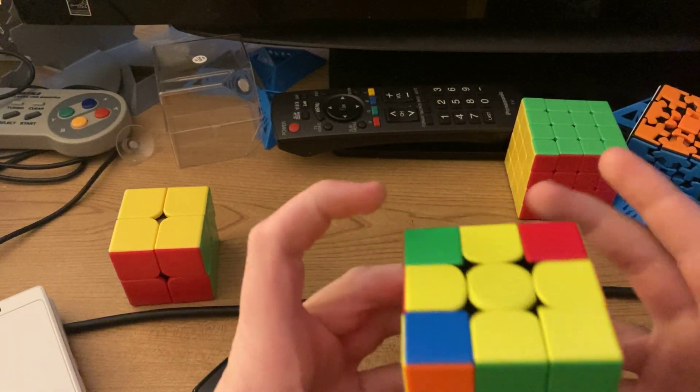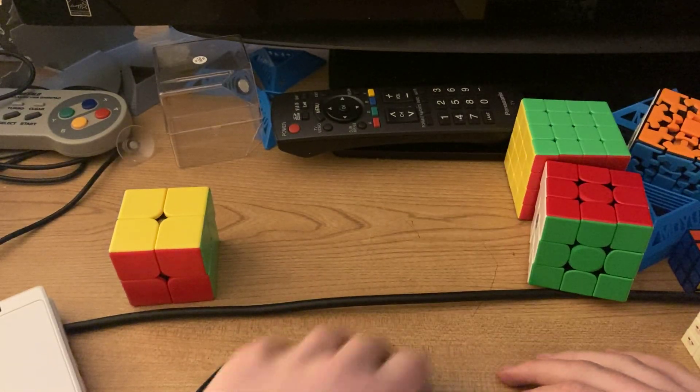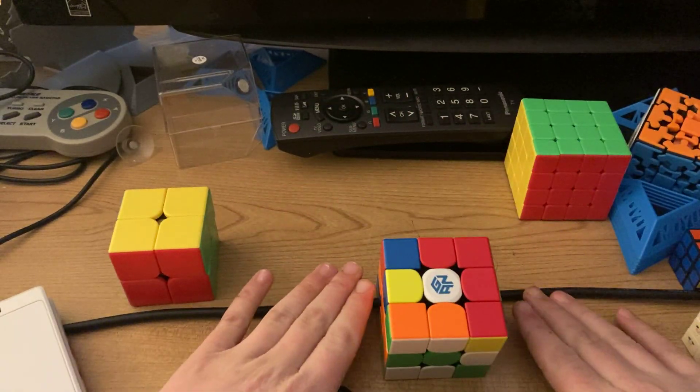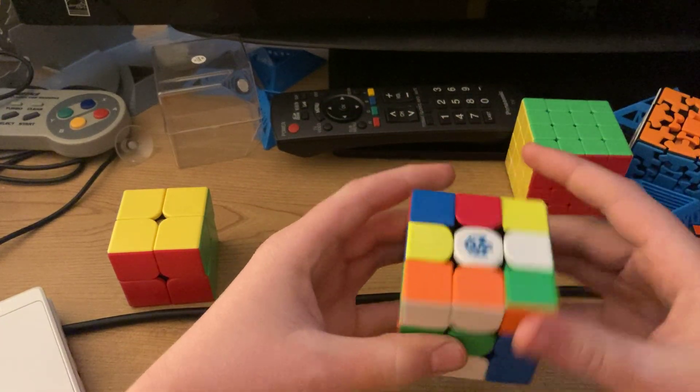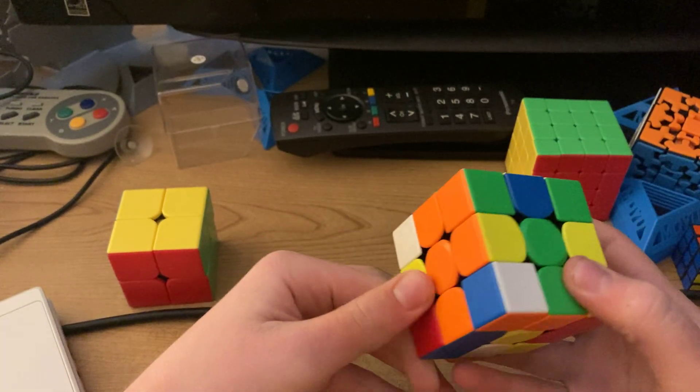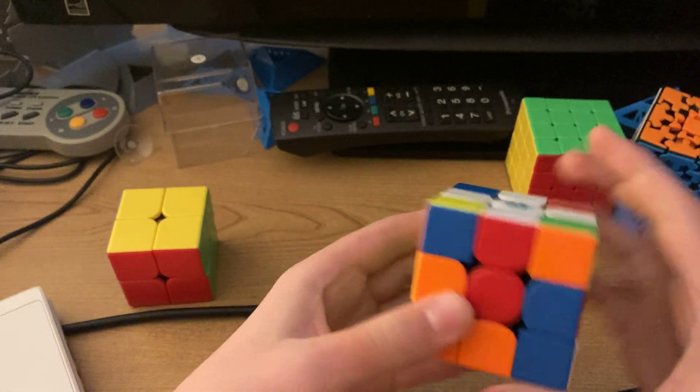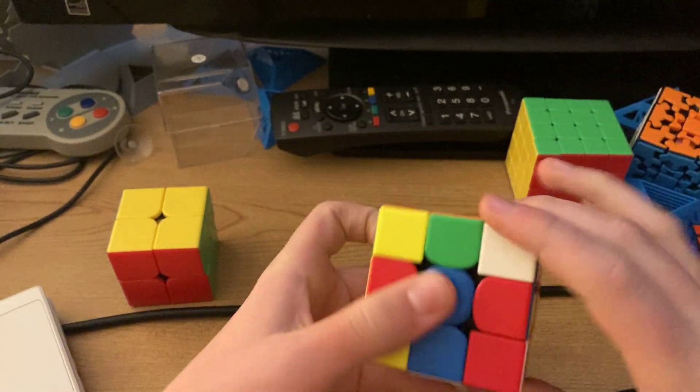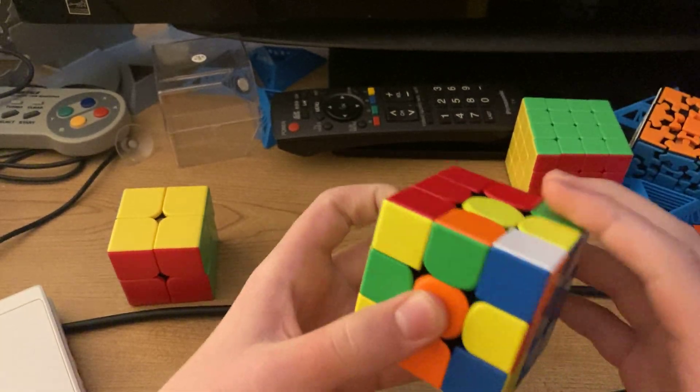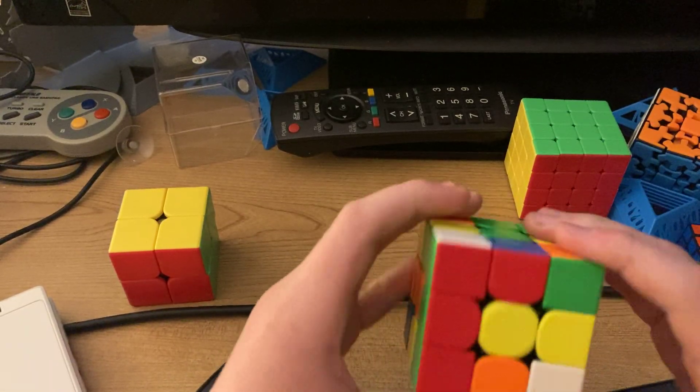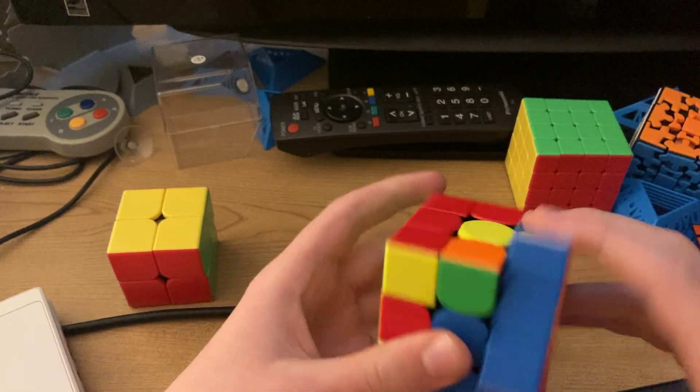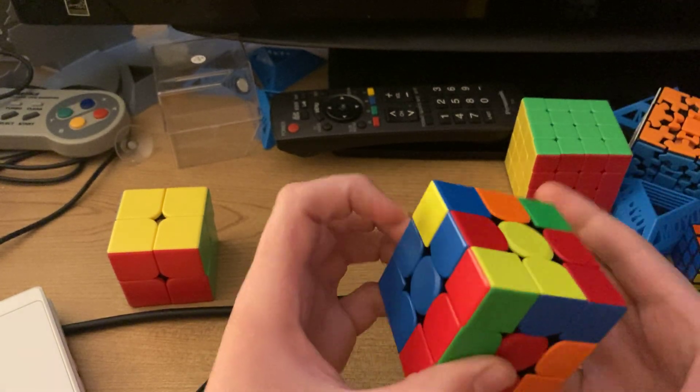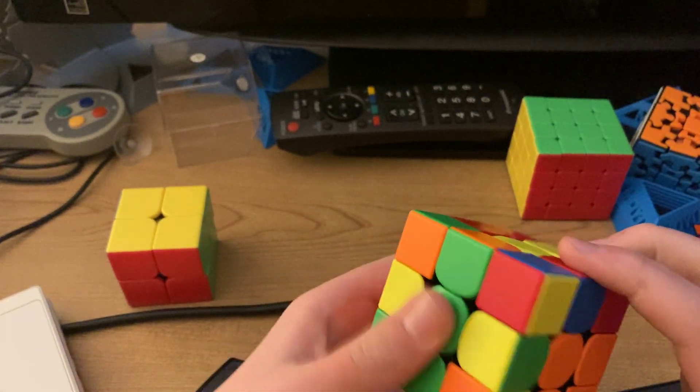The Rubik's cube basically works, like I don't know, but it, you have to follow movements. Movements. And there are certain movements that you have to like solve piece, like piece, by like piece. And you need to do algorithms for that because if you don't you will mess up the cube.